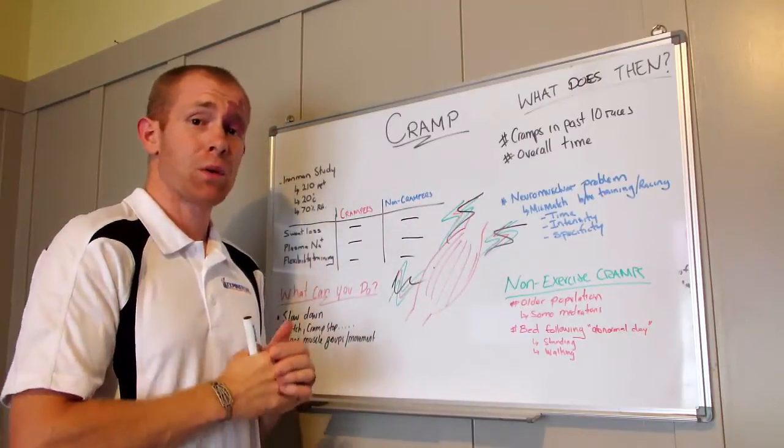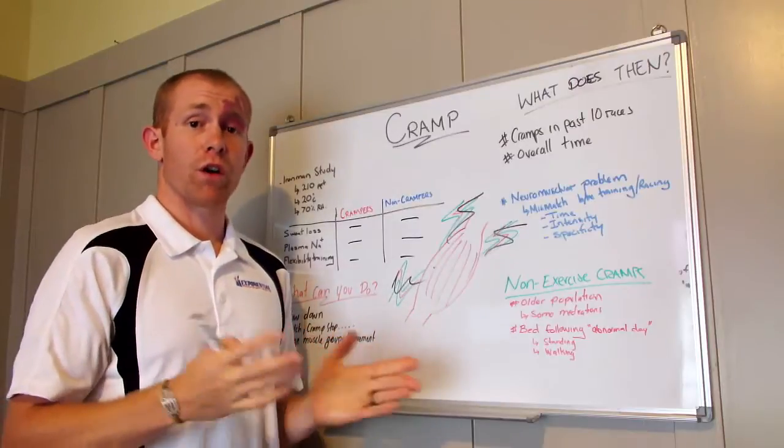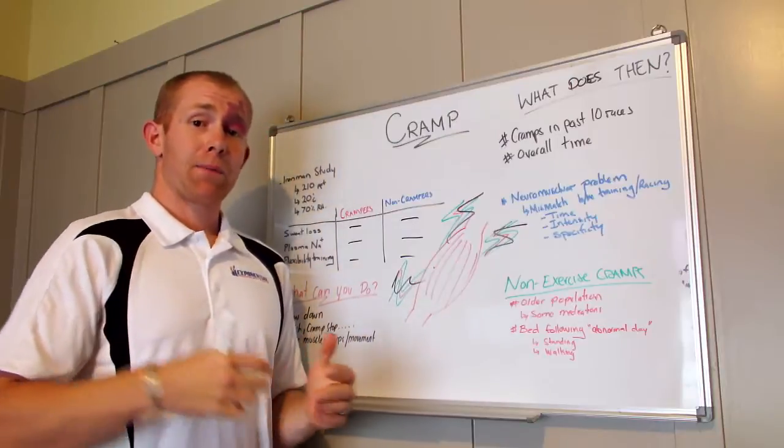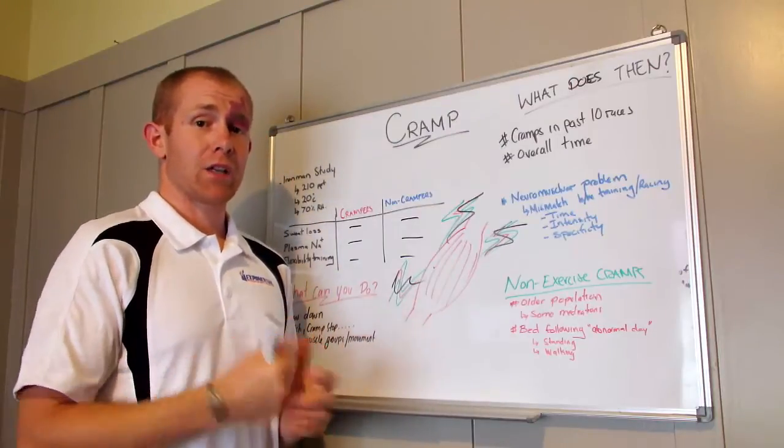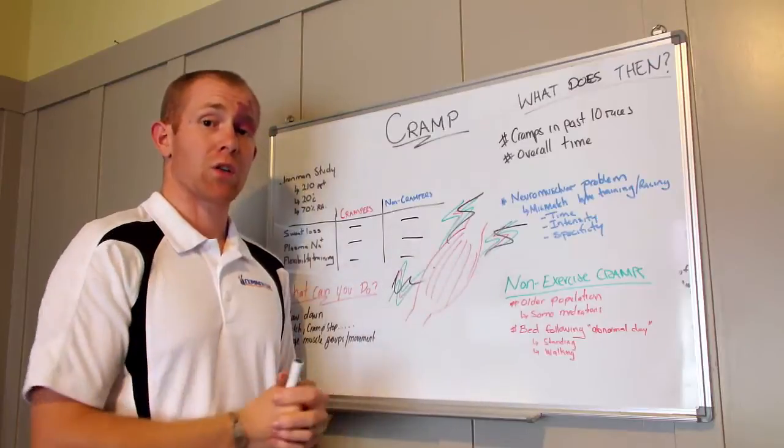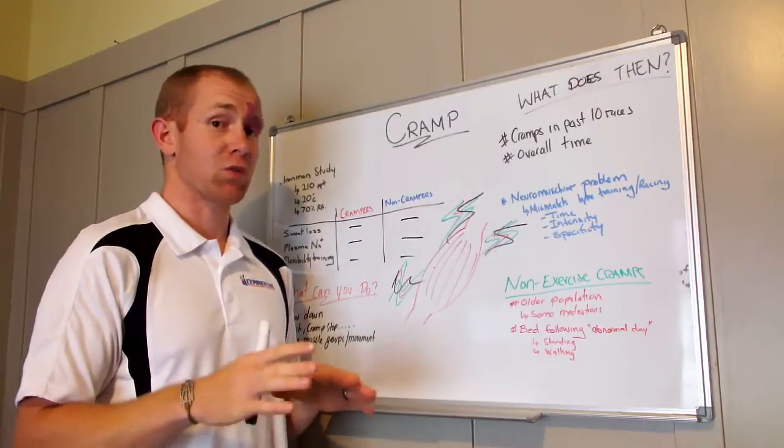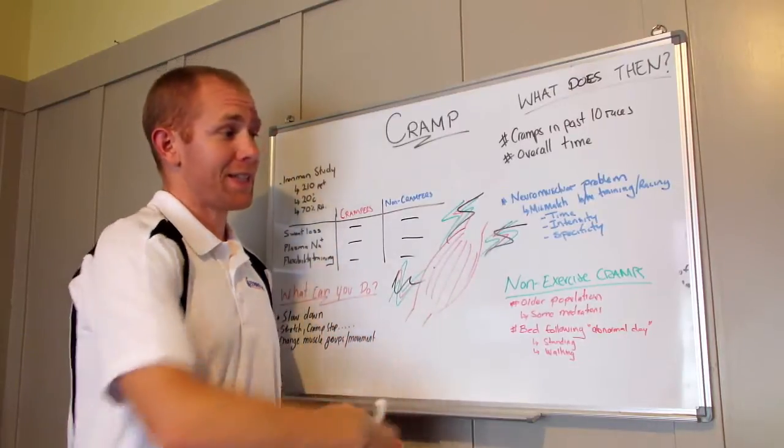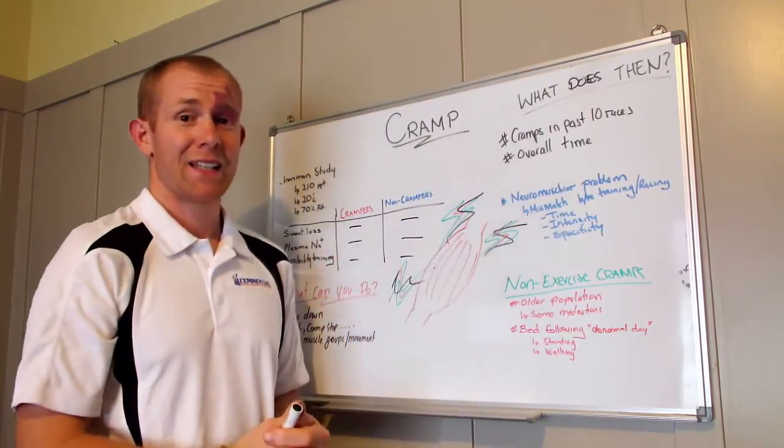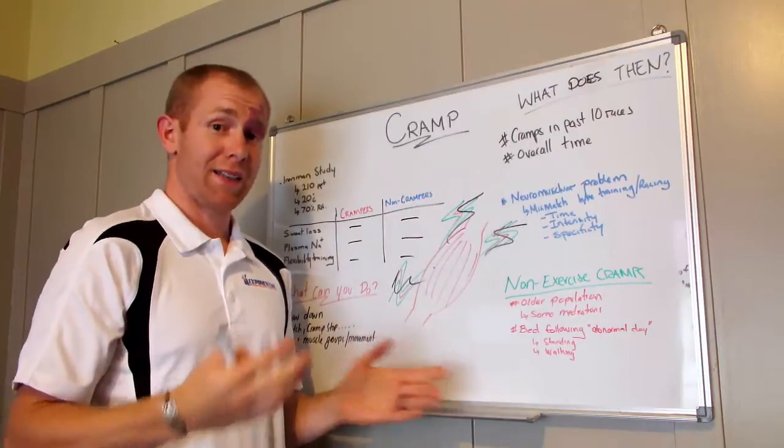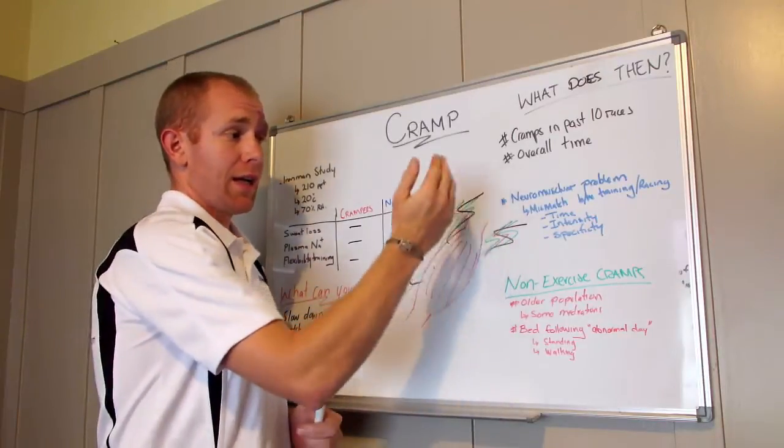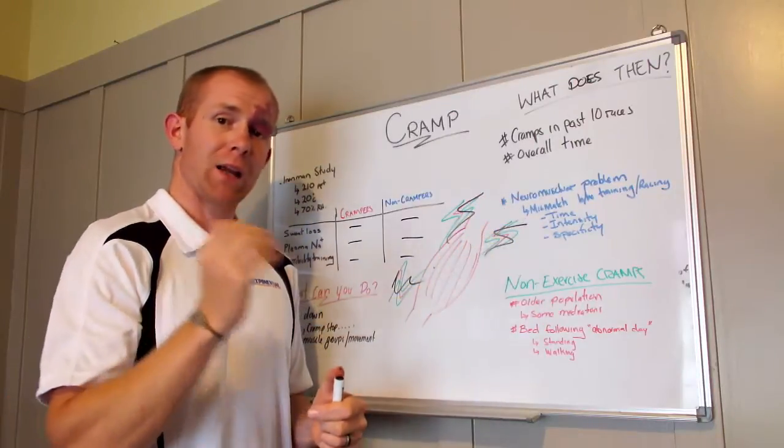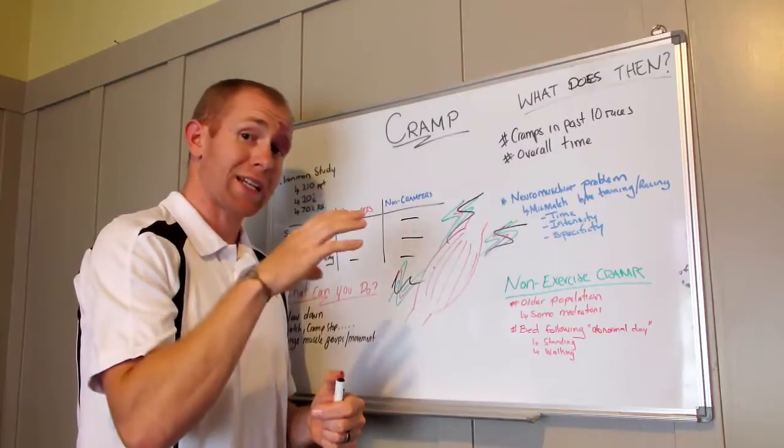Then specificity as well. This is really crucial. Some people will train on road for an off-road run. The coast-to-coast in New Zealand is a classic one. People will train all year, get to the coast-to-coast run, and then experience cramp on the coast-to-coast course because it's a very specific terrain. Have a look at your time, your intensity, and your specificity. If you can nail all those aspects of your training, usually that takes care of a lot of the cramping problem.